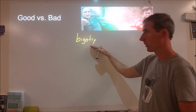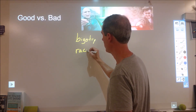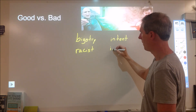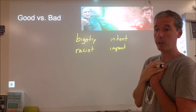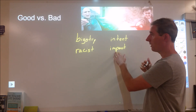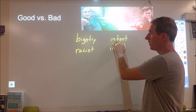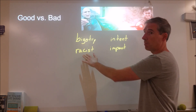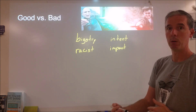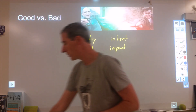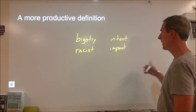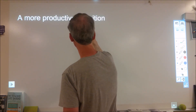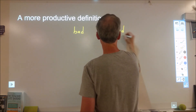Most things that happen that are racist are done by people who have good intentions but a negative impact. As a teacher, I know I've definitely had negative impacts where I've done something racist even though I never had malintentions towards someone else. I don't consider myself to be a bigot, but that doesn't mean I can't have a racist impact — even on someone I care for. So when we define racism, we want to include both intent and impact, and separate it from labeling people into groups.